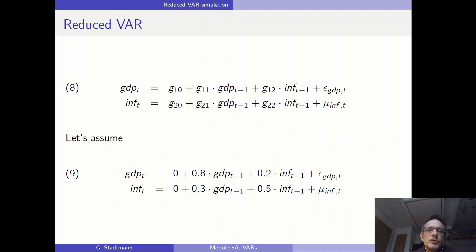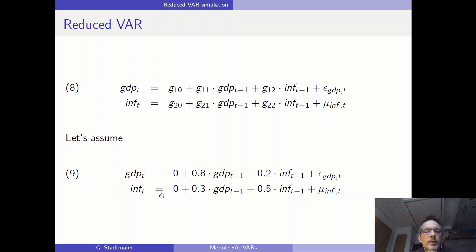We assumed that the intercepts in these reduced VARs are equal to zero, and then we assumed the following coefficients: 0.8 and 0.2 in the GDP equation, and 0.3 and 0.5 in the inflation equation.